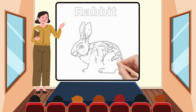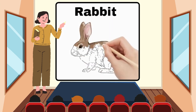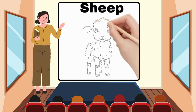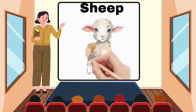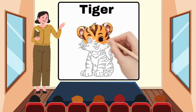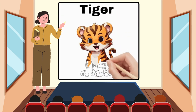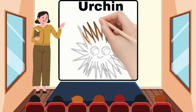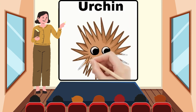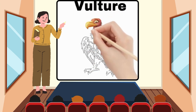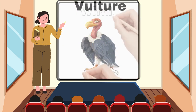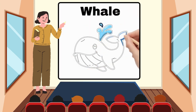R for Rabbit. S for Sheep. T for Tiger. U for Urchin. V for Vulture. W for Whale.